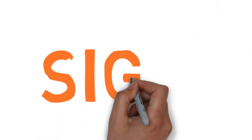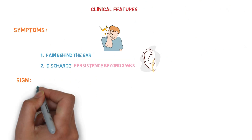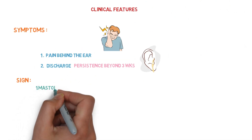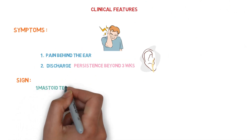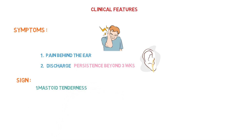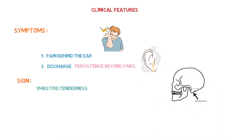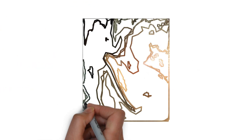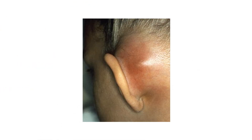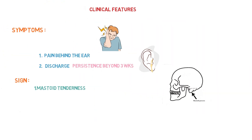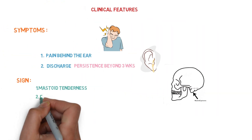What are the signs? The first and most important sign is mastoid tenderness. It is elicited by pressure over the middle of the mastoid process at its tip, posterior border, or root of the zygoma. When checking mastoid tenderness, it should always be compared with that of the healthy side.